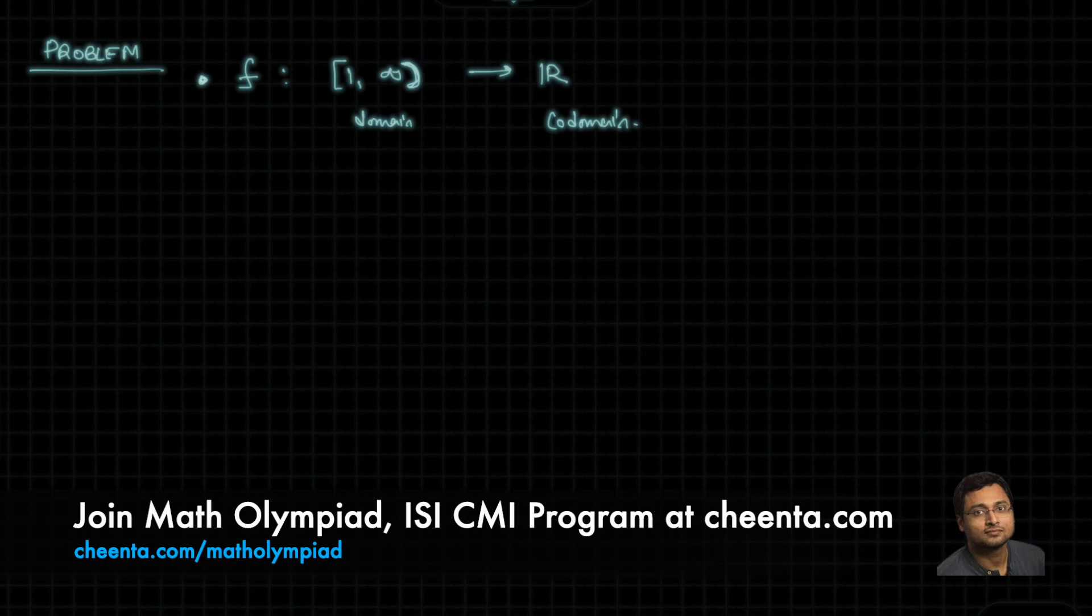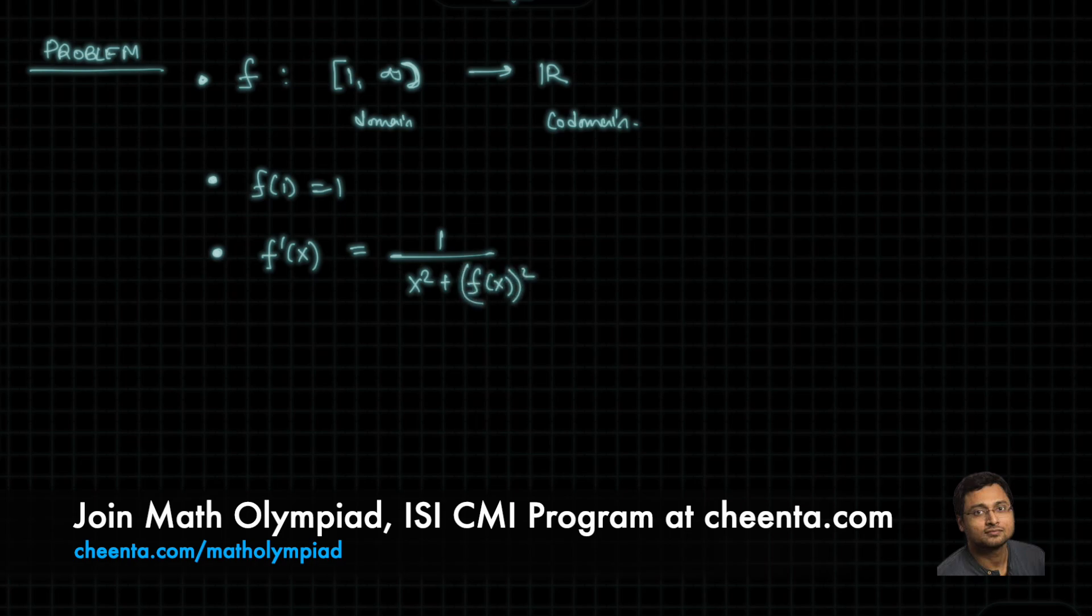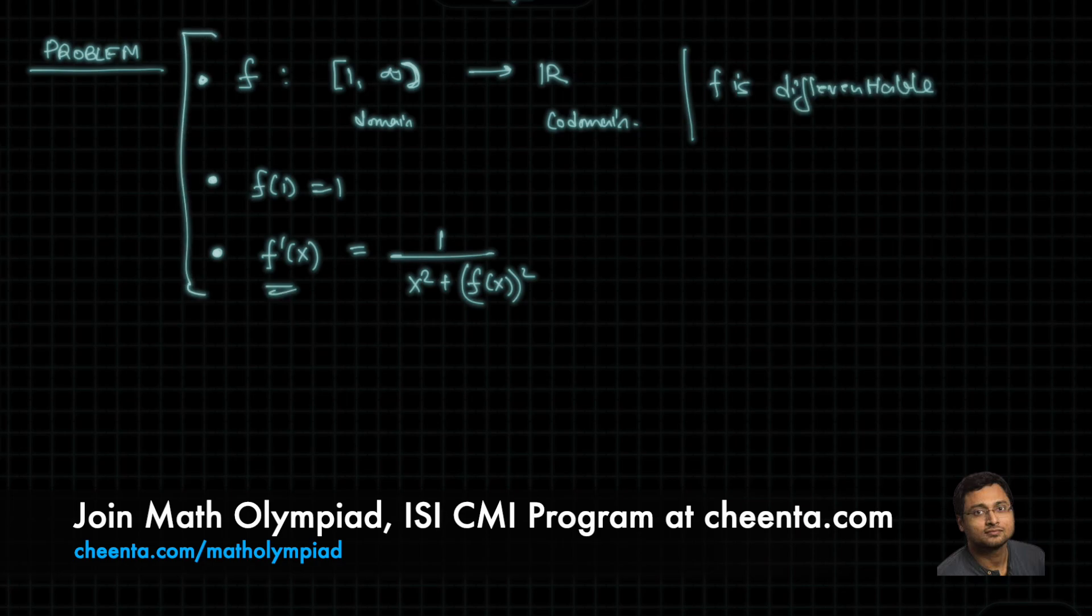It's also given that f of 1 is equal to 1, and finally it's given that f prime of x, that is the derivative of x, is equal to 1 over x square plus f of x whole square. By the way, it's given that f is differentiable, hence we can write f prime of x. So all of this is given data.